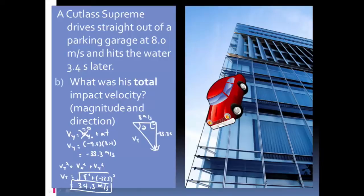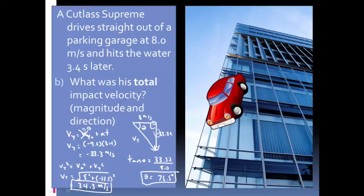For the direction, tan-theta equals 33.32 divided by 8.0, so theta equals 76.5 degrees. The final answer is 34.3 meters per second at 76.5 degrees below horizontal. We say 'below horizontal' because the car is dropping downward — we haven't defined compass directions, so below horizontal is a clear and easy way to express the angle.